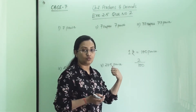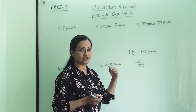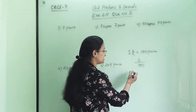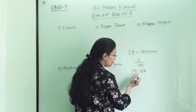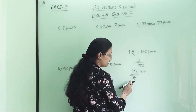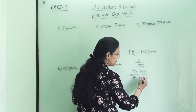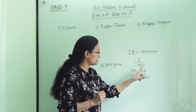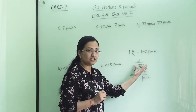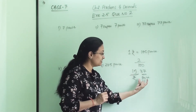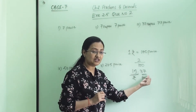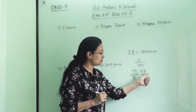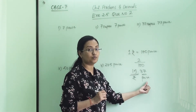So before the decimal, what numbers will come? Those reflect the rupees. For example, 15.37 — the numbers before decimal reflect rupees, and the numbers after decimal reflect paise. Because 1 rupee equals 100 paise, when we write 100 in the denominator of paise values, they come after the decimal. So before decimal tells us how many rupees, and after decimal tells us how many paise.